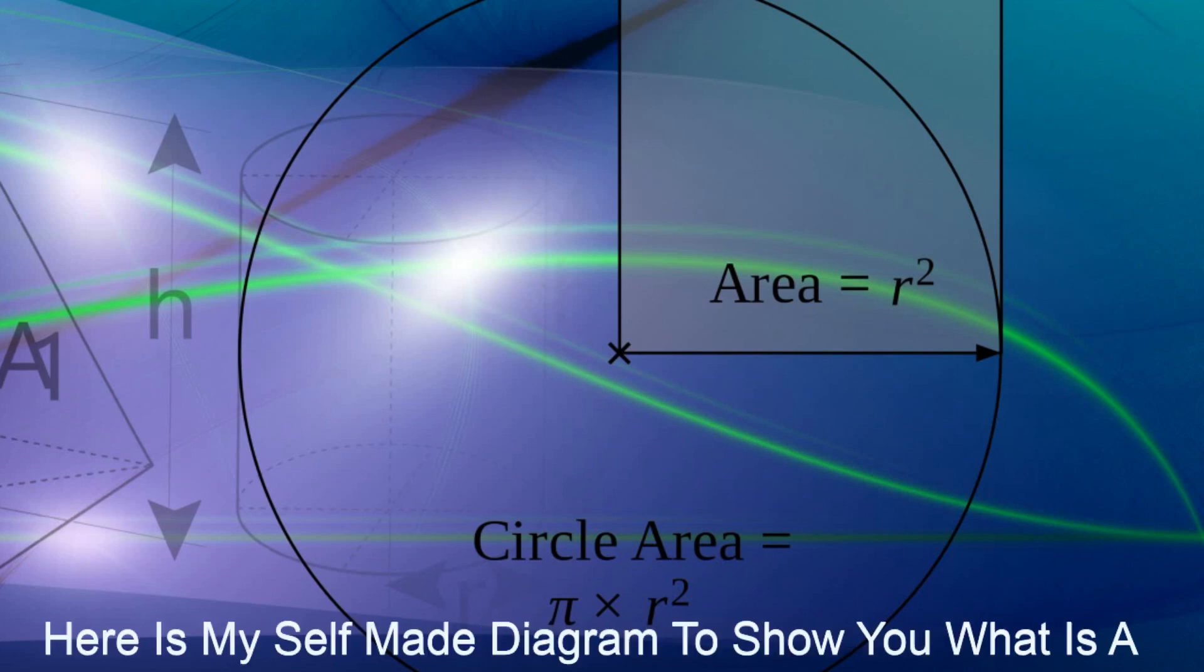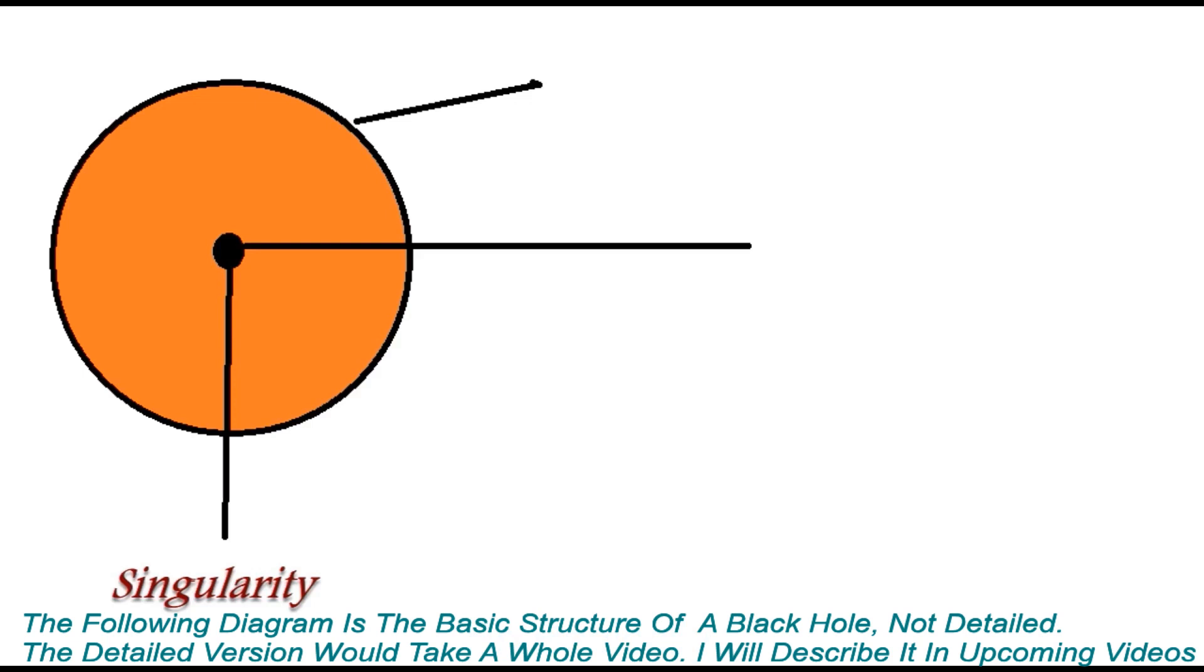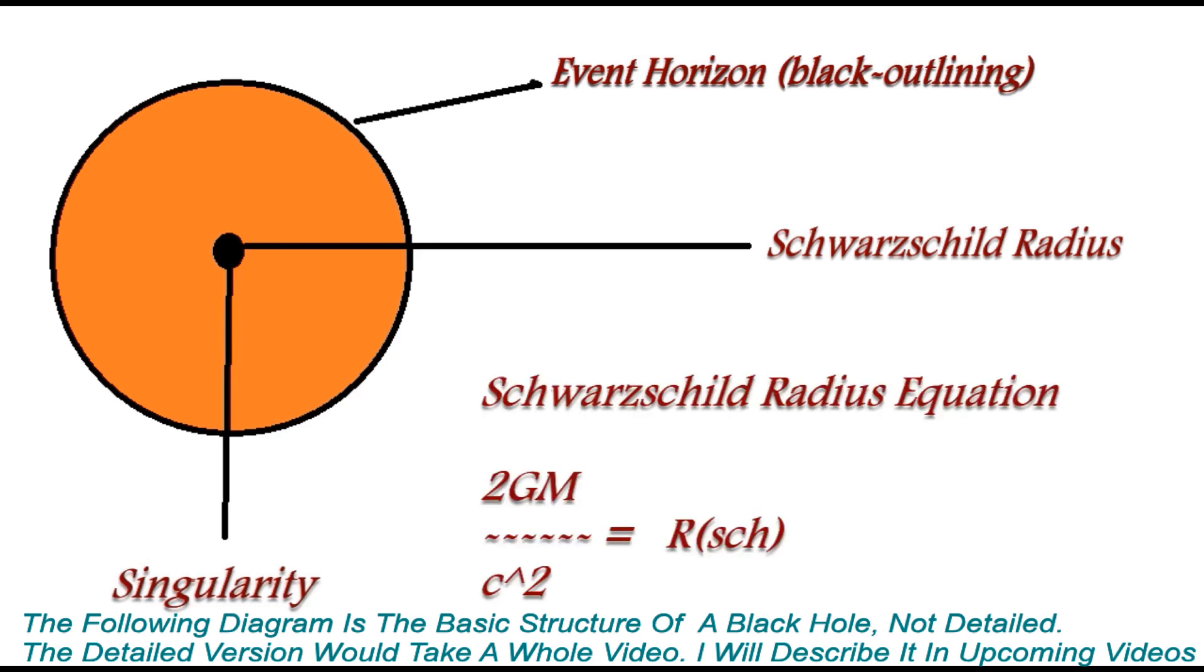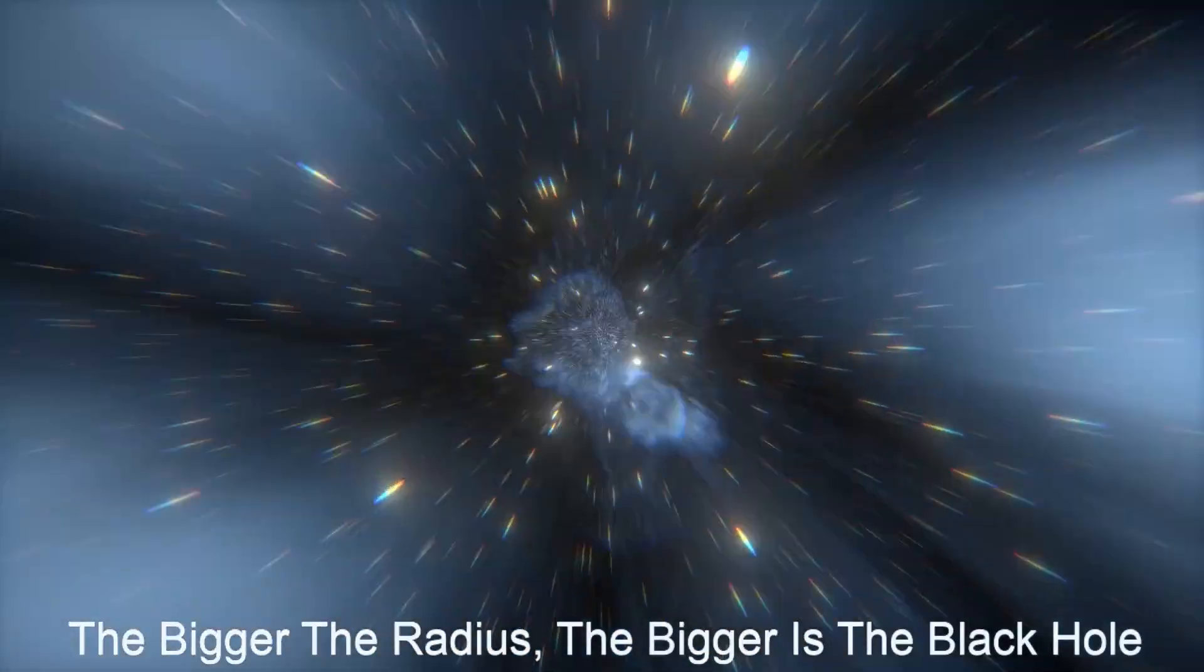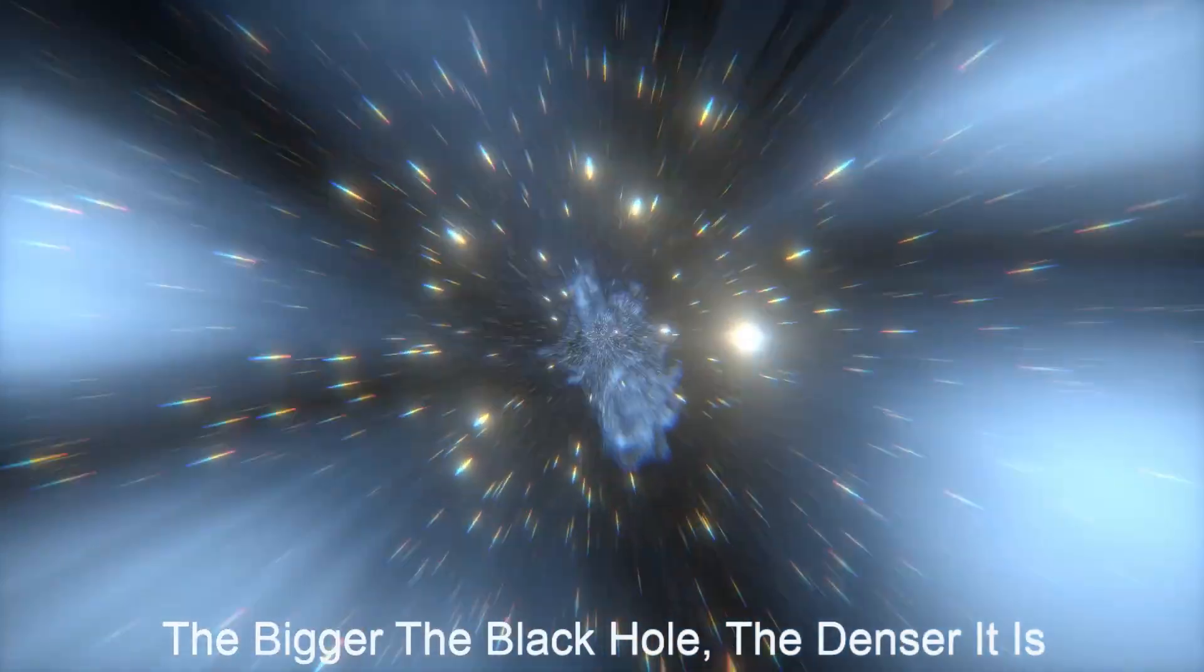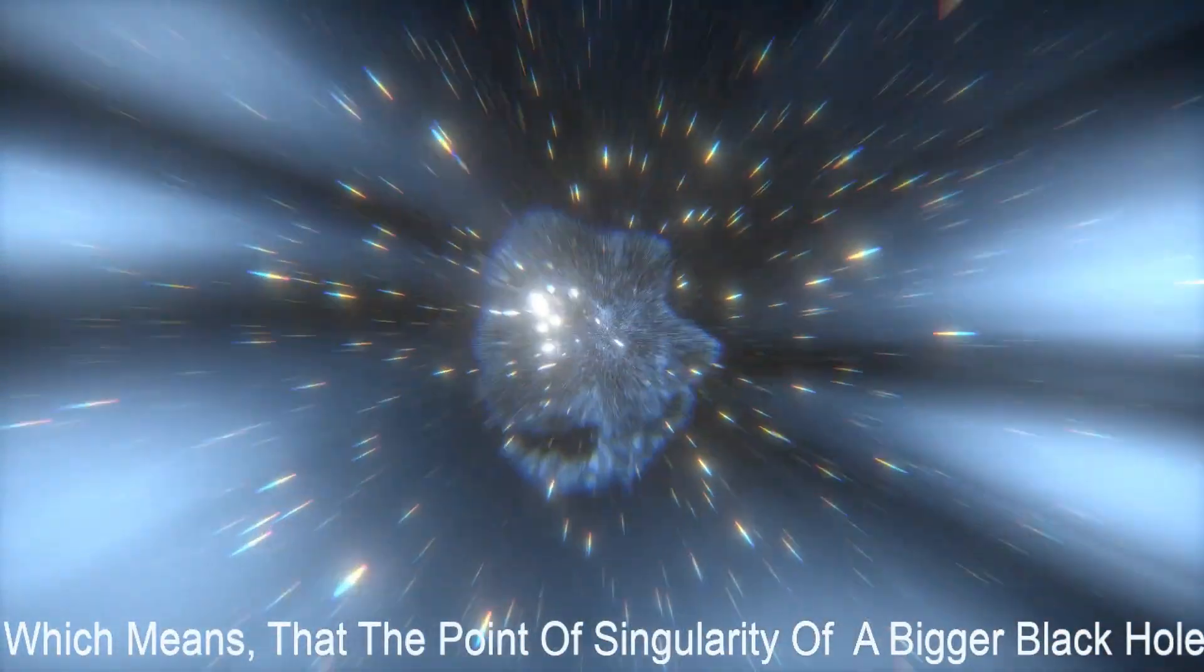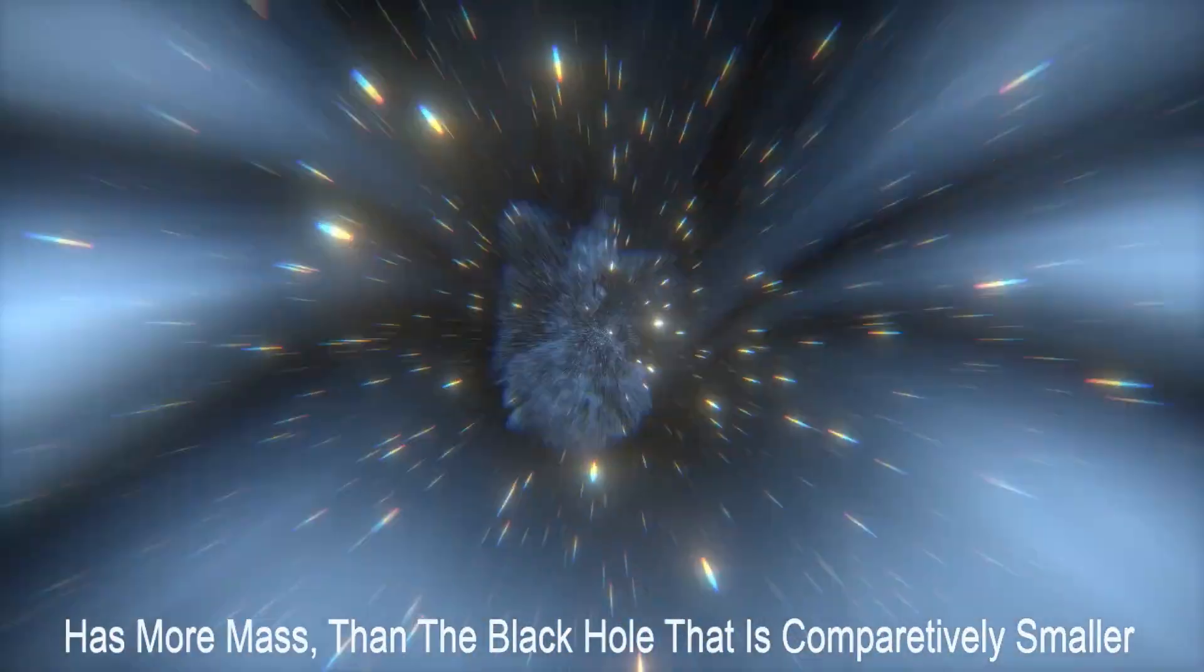Here is my self-made diagram to show you what is a black hole's basic structure. So basically we have our singularity and then we have the event horizon which is a black outlining, and then we have the Schwarzschild radius around the singularity with the Schwarzschild radius equation. So basically we can say that the bigger the radius, the bigger is the black hole. The bigger the black hole, the denser it is, which means that the point of singularity of a bigger black hole has more mass than a black hole that is comparatively smaller.